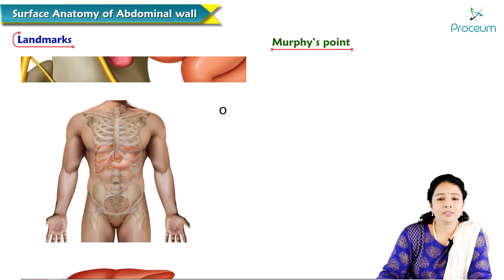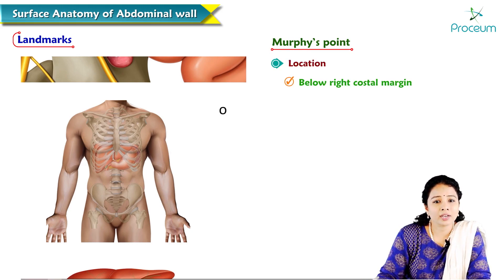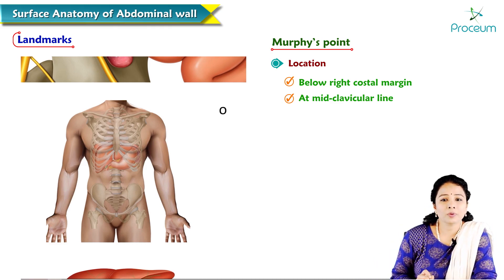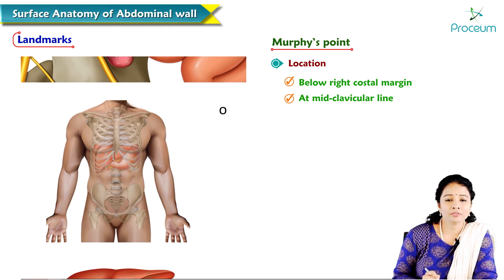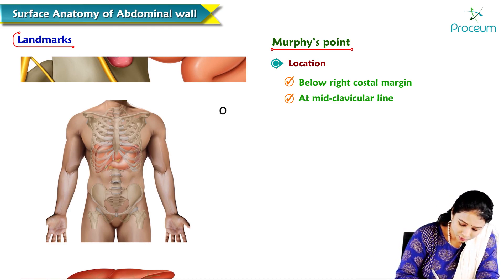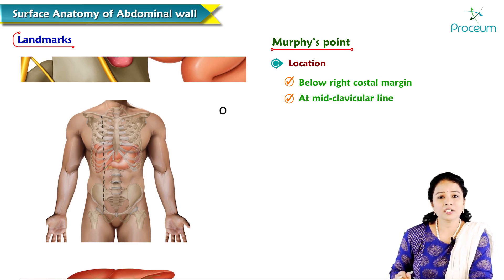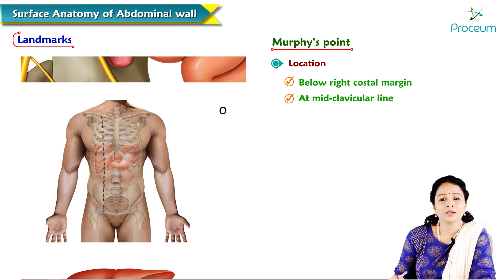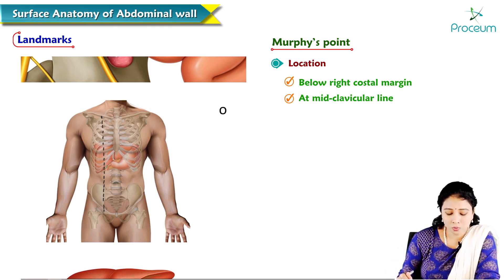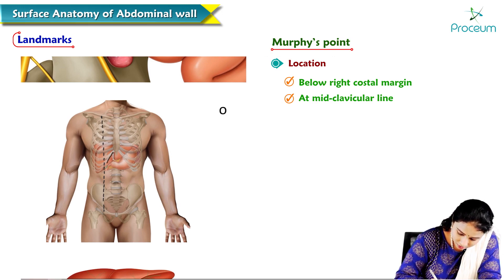The first point is Murphy's point. It lies below the right costal margin in the mid-clavicular line. To locate Murphy's point, we first draw the mid-clavicular line — a vertical line drawn along the midpoint of the clavicle. Here the dotted line is the mid-clavicular line, and where it meets the right costal margin is Murphy's point.